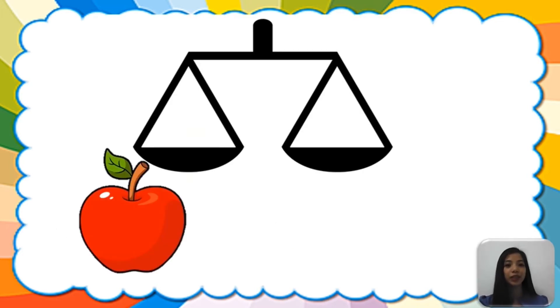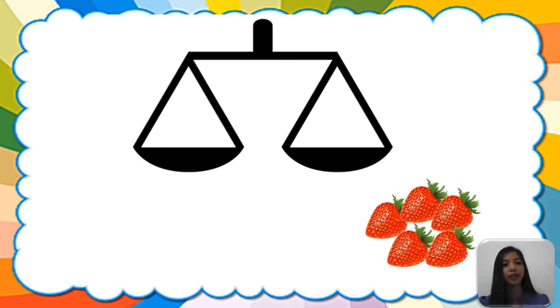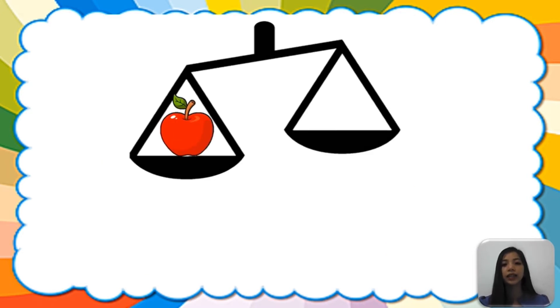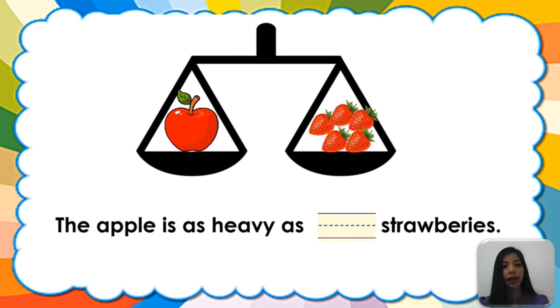Next, we will measure an apple and strawberries. Let's see if these items or objects has the same mass. So let's put the apple and then the strawberries. Since they are equal, therefore the apple is as heavy as, let's count, one, two, three, four, five strawberries.